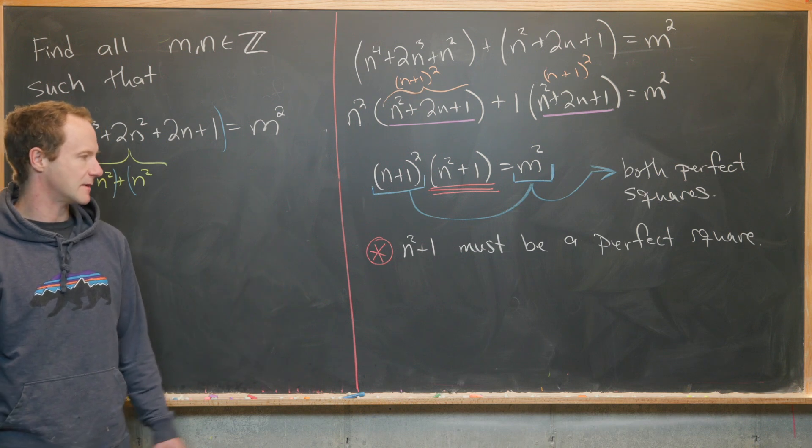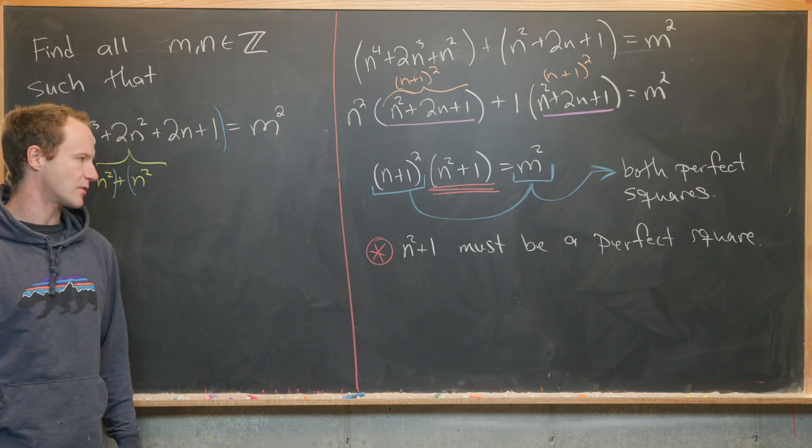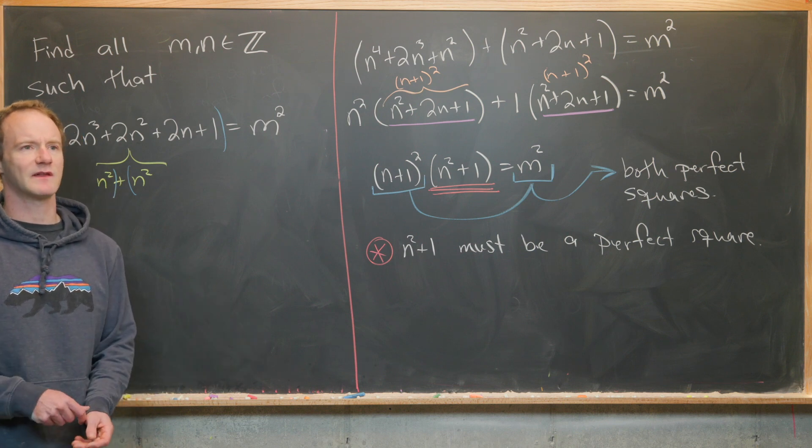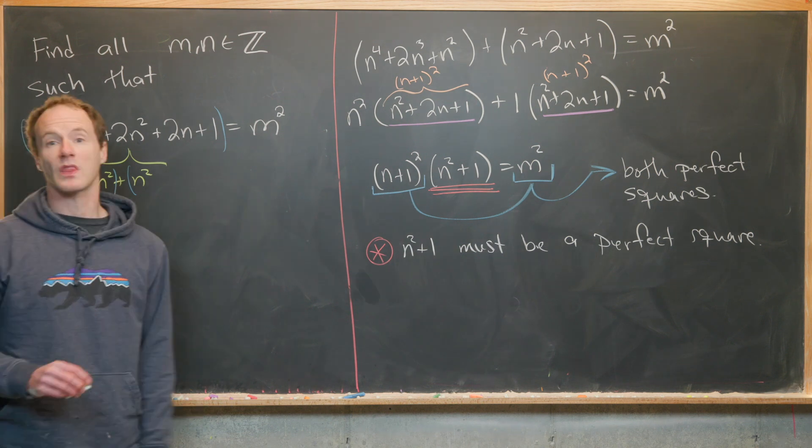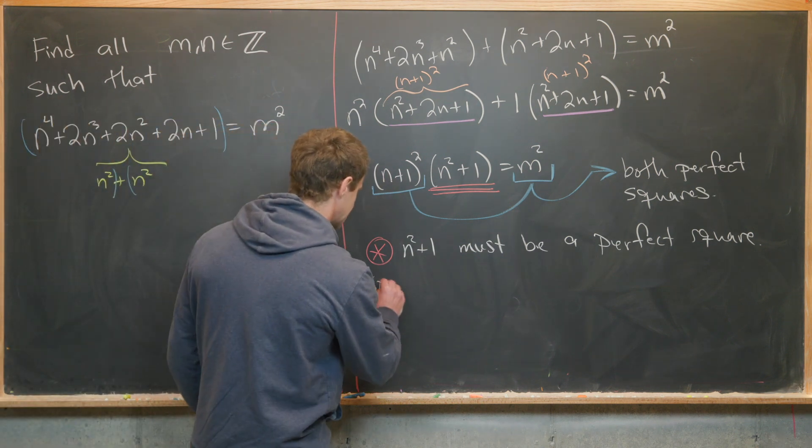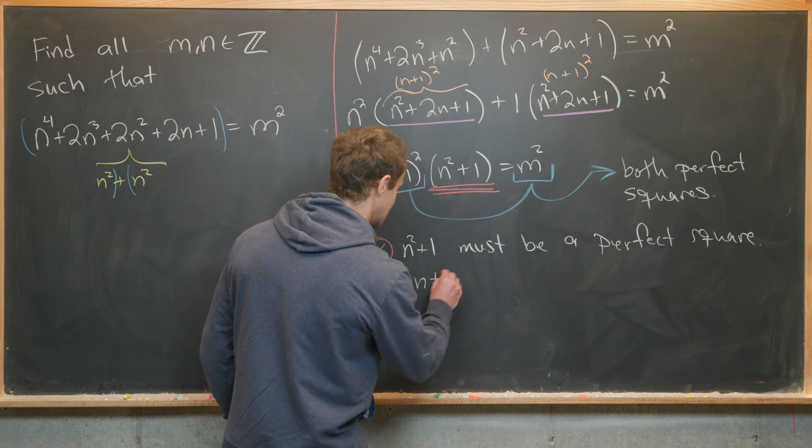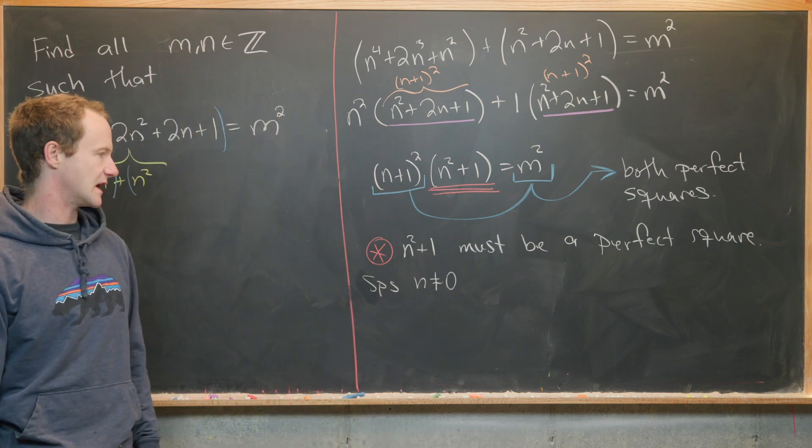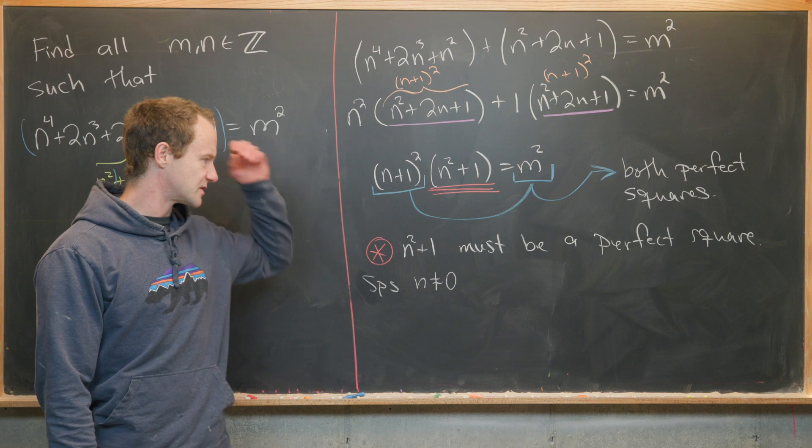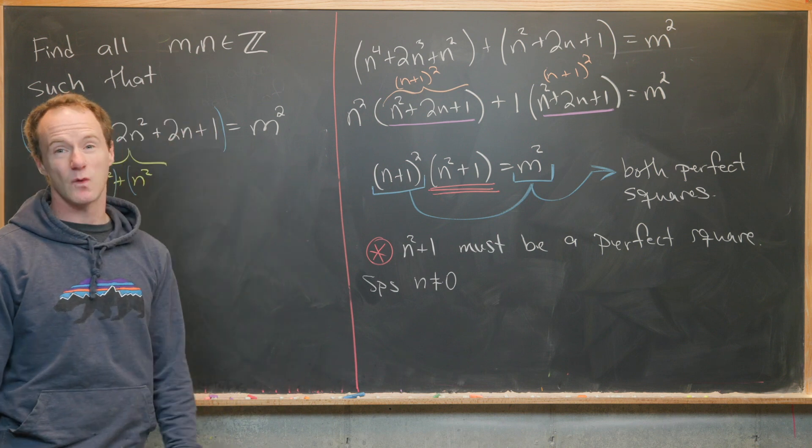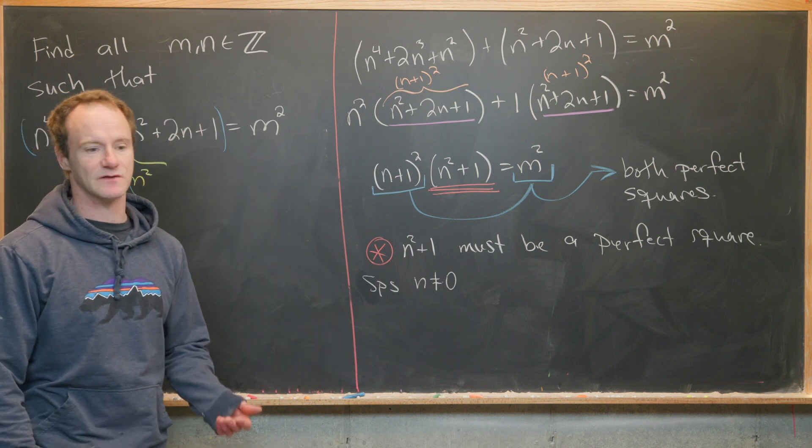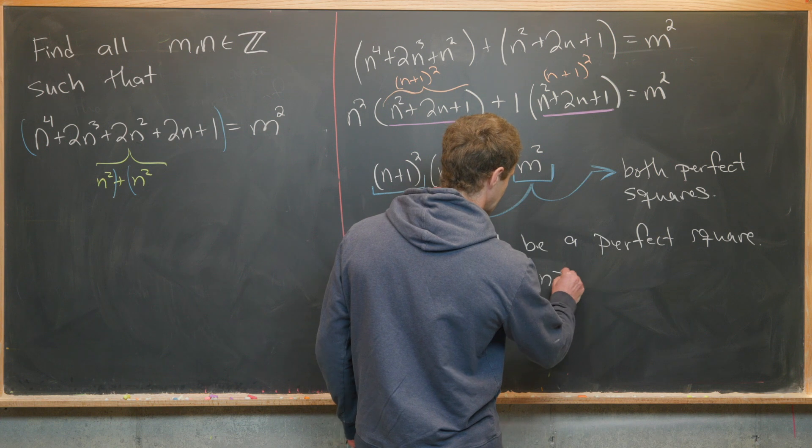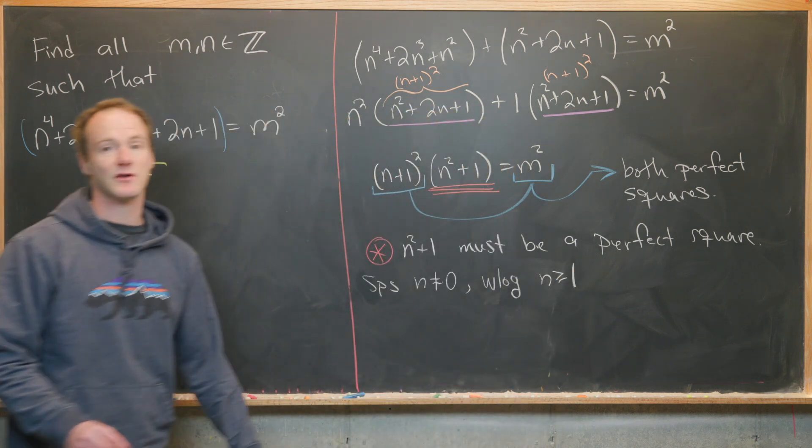But now thinking about it, n squared plus 1 seems like it would only be a perfect square if n equals 0, because it would be extremely unlikely to have perfect squares as consecutive numbers. We'll prove it with the following inequality. Let's suppose n is not equal to 0. Even though we're working over all integers, since n only appears as n squared, we only need to consider the positive ones. Without loss of generality, we can assume n is bigger than or equal to 1.